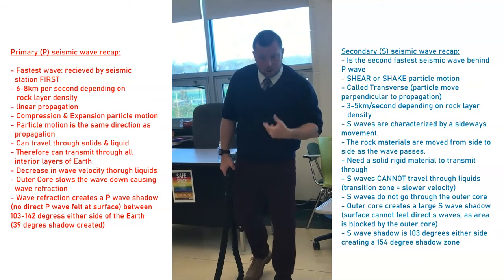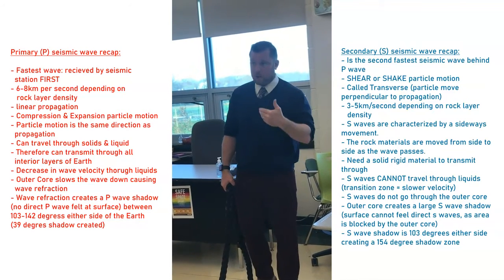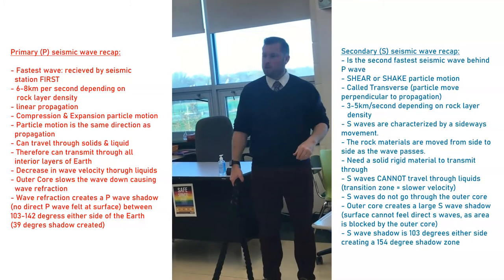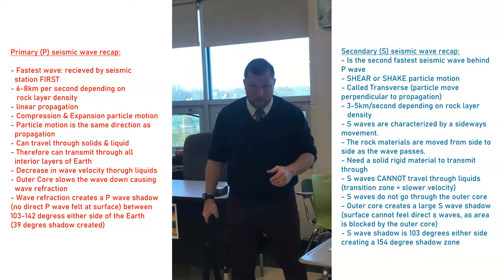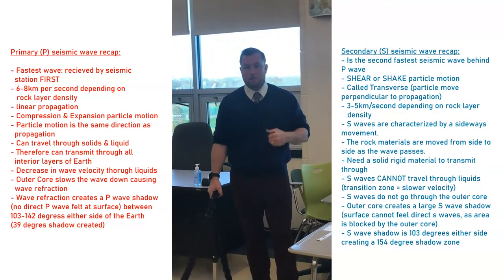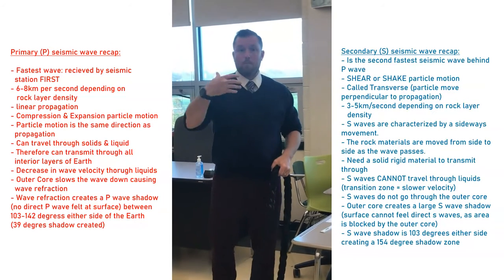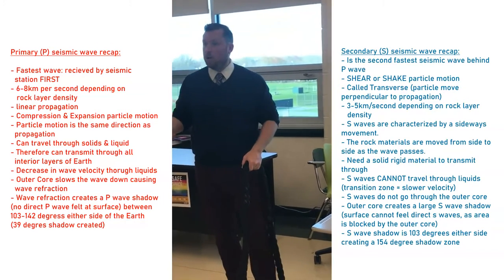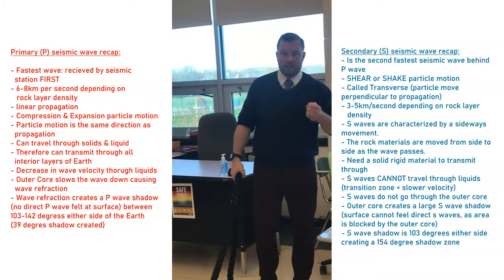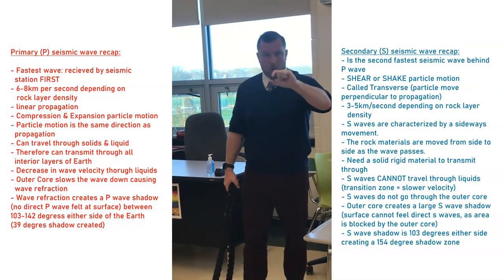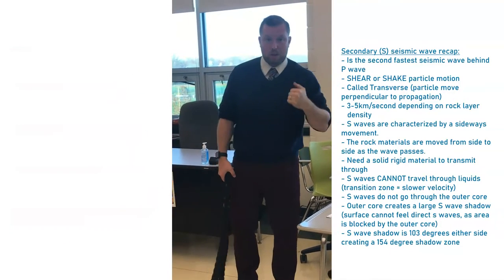Body waves travel through the center of the Earth. The next two waves we'll discuss are called the L and the R waves. L stands for Love, named after Dr. Love who discovered it. The other is the Rayleigh wave, named after a guy named Rayleigh. These two waves are called surface waves because they only travel through the surface, since they have less energy and are slower.